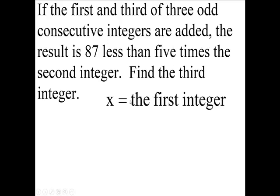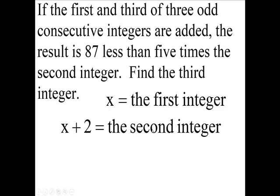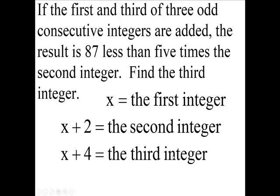So my odd integers. First is x. x plus two would be the second one. And if you add two to this, you're going to have x plus four. And that's going to be the third odd integer.